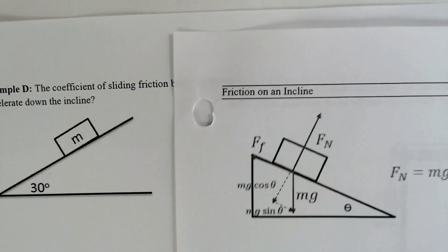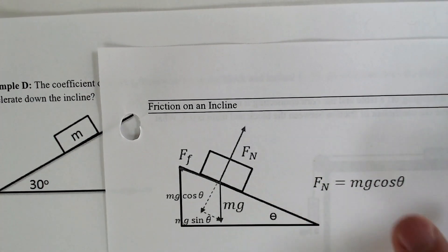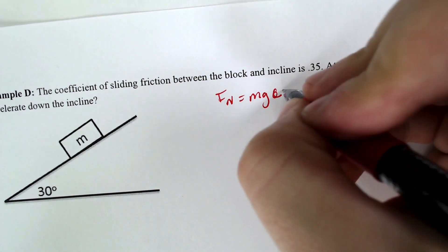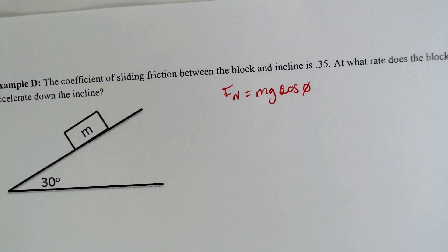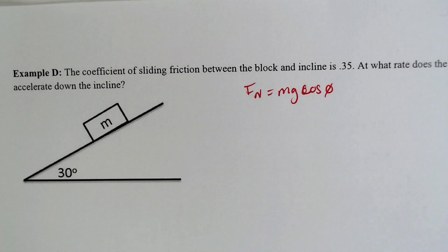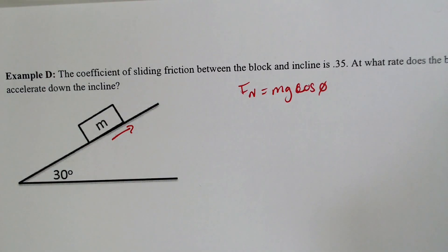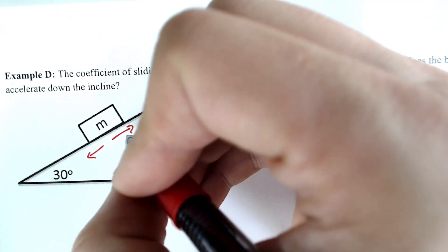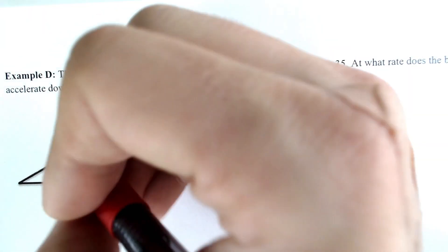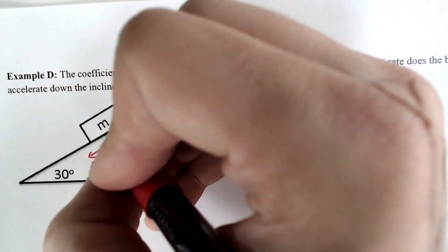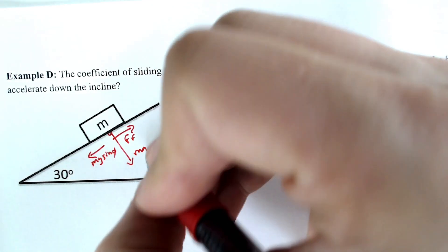I'm going to write down a few things so we don't have to keep the picture up. The normal force Fn equals mg cosine theta. For the sum of all forces, we need to figure out how much friction is pushing against the block while the sine component is driving it down the ramp. So we have the force of friction, mg sine theta for the component along the plane, and the normal force which is mg cosine theta.